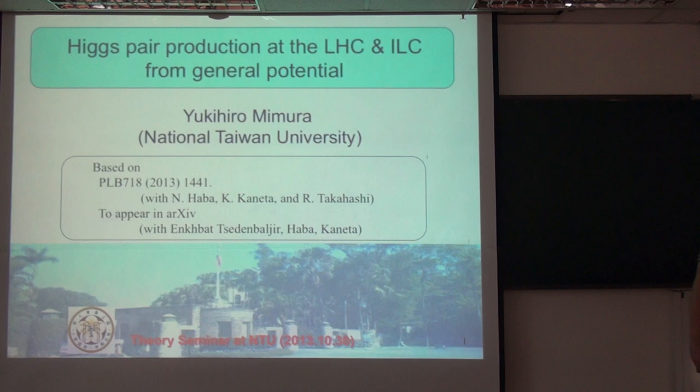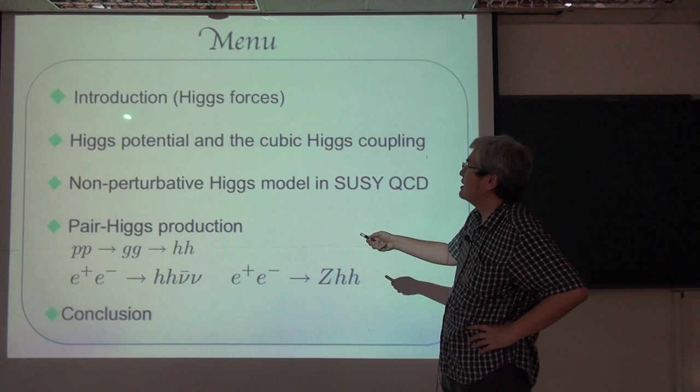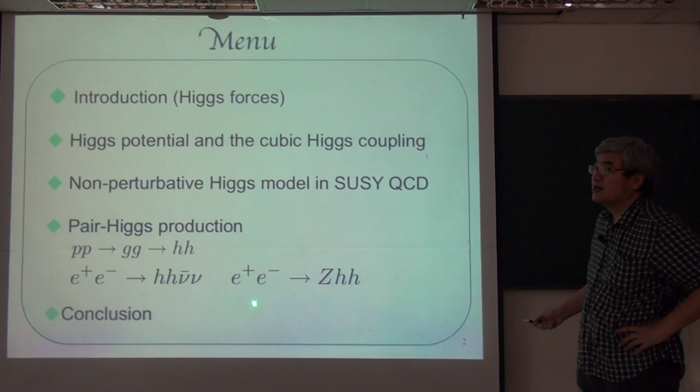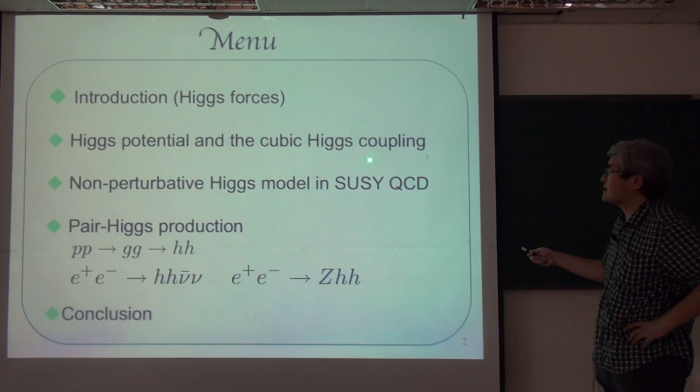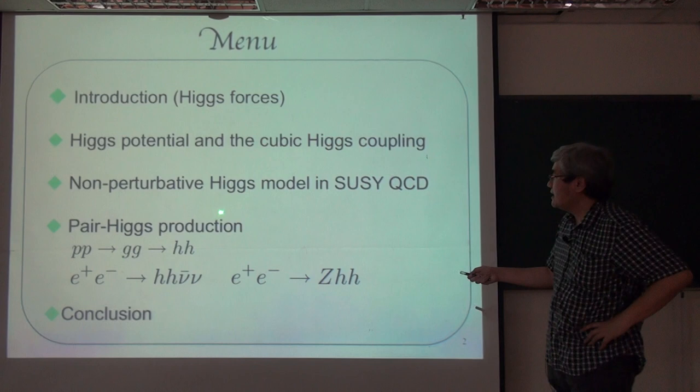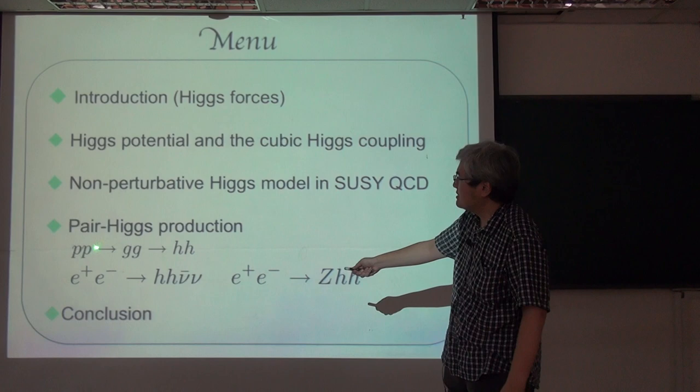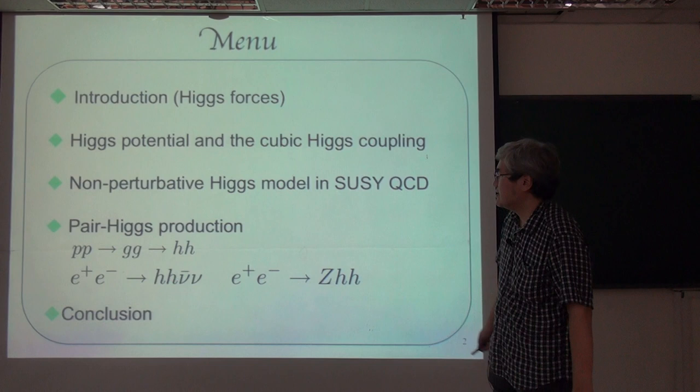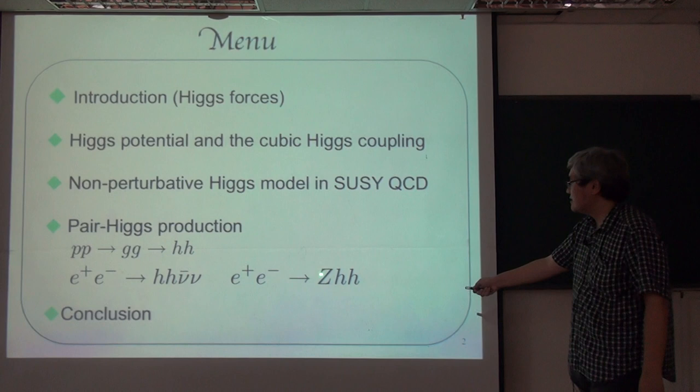This is the menu of today's talk. First, we will see the introduction — I will introduce about the Higgs forces. Next, we will see the Higgs potential, general Higgs potential, and the cubic Higgs coupling. Next, we will introduce the non-perturbative Higgs model using supersymmetric QCD. And the main topic is Higgs pair production: at the LHC, pp to gluon-gluon to Higgs; and at the ILC, e+e- to ZHH and GHH. Finally, I will summarize the main points.